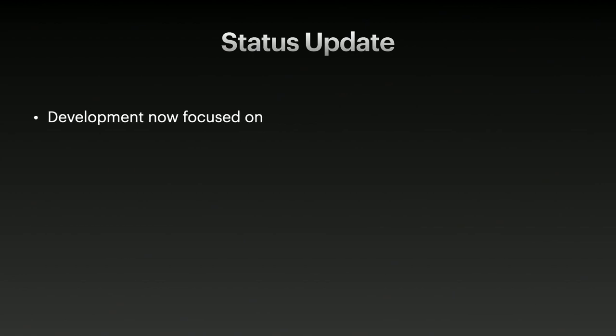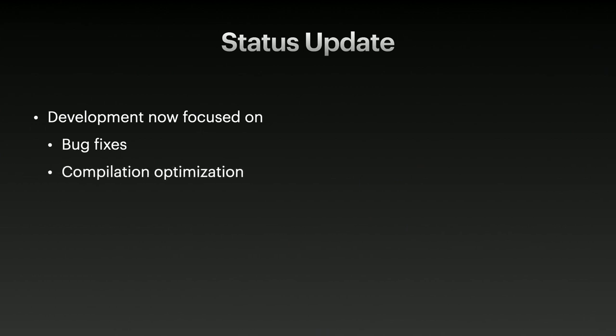So what are we working on now? Development is now focused on bug fixes and compilation optimization. We've been working very hard to take care of bug reports as they come in — as you heard this morning, we've tackled almost a thousand from both internal and external sources. We're getting to the point where there are still some important bugs to fix, but many have been resolved. We're also starting incremental compilation optimization, and the first phase of compilation will be optimized before we ship.